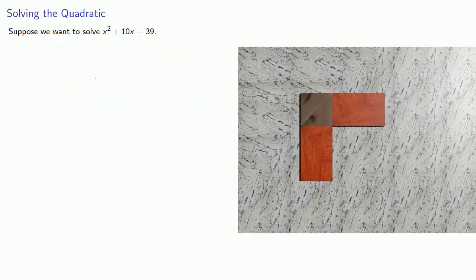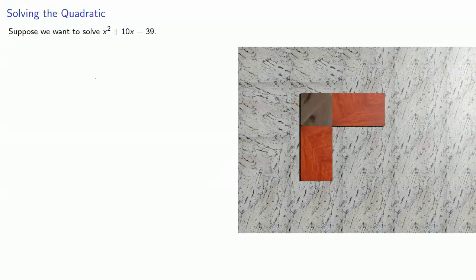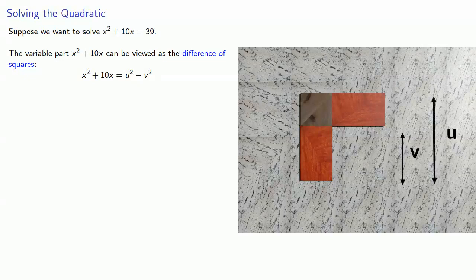So suppose we want to solve x² + 10x = 39. The variable part x² + 10x can be viewed as the difference of squares, u² - v². And so we see that this x, the unknown side, is actually u - v.